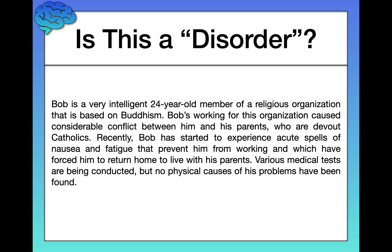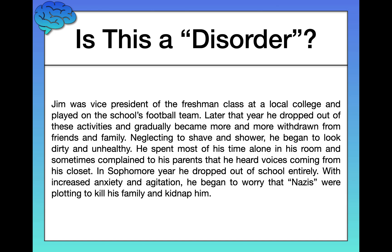Bob is a very intelligent 24-year-old member of a religious organization based on Buddhism, which has gotten him into conflict with his devout Catholic parents. Recently Bob has started to experience acute spells of nausea and fatigue — some physiological symptoms that prevent him from working and have forced him to return home to live with his parents. Various medical tests have been conducted but no physical causes of his problems have been found. What's your assessment of Bob?